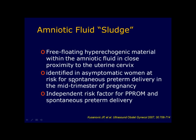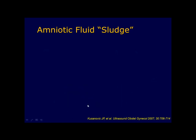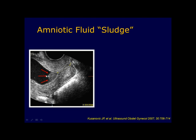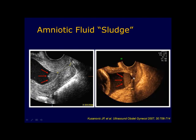Sometimes you may notice free-floating hyperechoic material within the amniotic fluid in close proximity to the uterine cervix. The term amniotic fluid sludge has been proposed for this sonographic finding. Amniotic fluid sludge has been identified in asymptomatic women at risk for spontaneous preterm delivery in mid-pregnancy, and is an independent risk factor for preterm premature rupture of membranes and spontaneous preterm delivery. Examples are shown in patients with a short cervix, cervical funnel, and large amounts of amniotic fluid sludge.